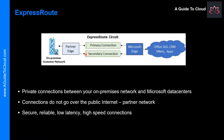Azure ExpressRoute lets you extend your on-premises network into the Microsoft Cloud over a dedicated private connection facilitated by a connectivity provider. With ExpressRoute, you can establish connections to Microsoft Cloud services such as Microsoft Azure, Office 365, and CRM Online. ExpressRoute connections don't go over the public internet and they offer more reliability, faster speed, and lower latencies than any typical internet connections.